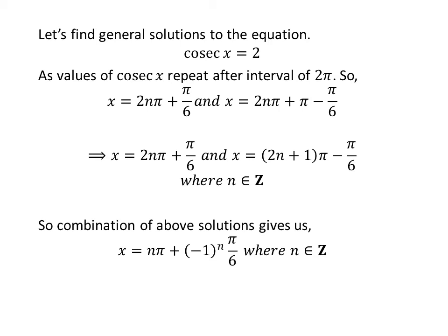Also, minus 1 raised to the power of n is minus 1 if n is an odd number and plus 1 if n is an even number. So, the general solution to the equation is n times pi plus minus 1 raised to the power of n times pi upon 6, where n is an integer.